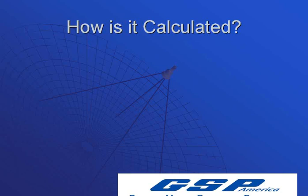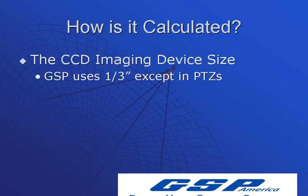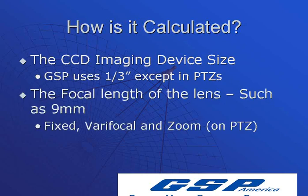So how do we calculate that? Basically, you need to take the imaging device size — GSP uses 1/3-inch except in our PTZ cameras. You also need to consider the focal length of the lens: is it 9 millimeters, 20 millimeters? We have fixed lenses, many cameras with a 4-millimeter fixed lens. Varifocal means you can manually adjust focus in a range — for example, 4 to 9 mm, 9 to 22 mm, or 5 to 50 mm. Zoom is an option on PTZ cameras, where you can adjust and change your view while looking through the system.